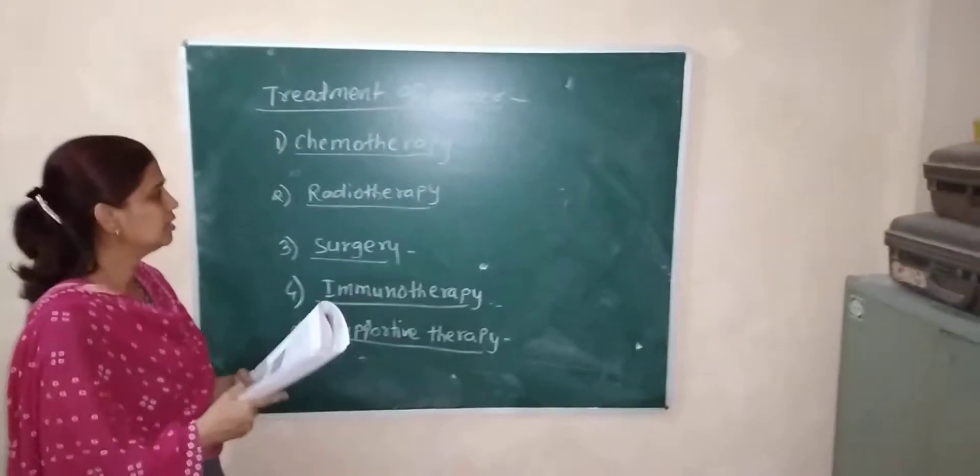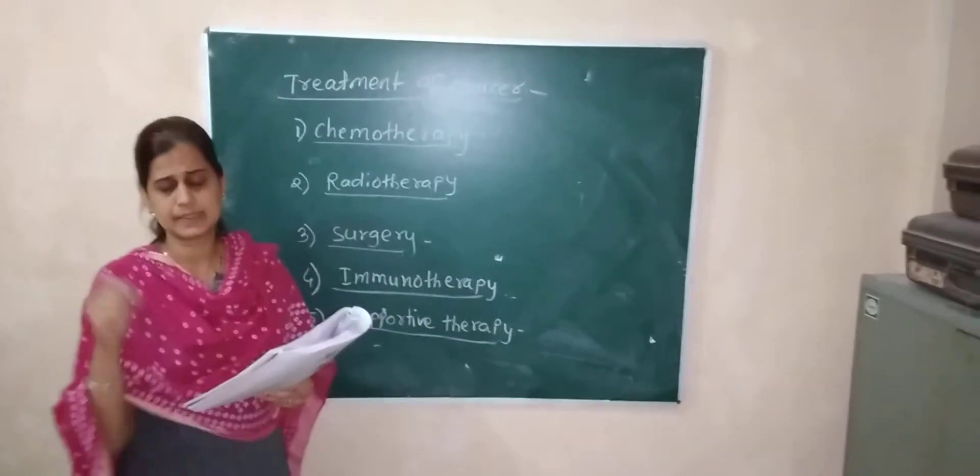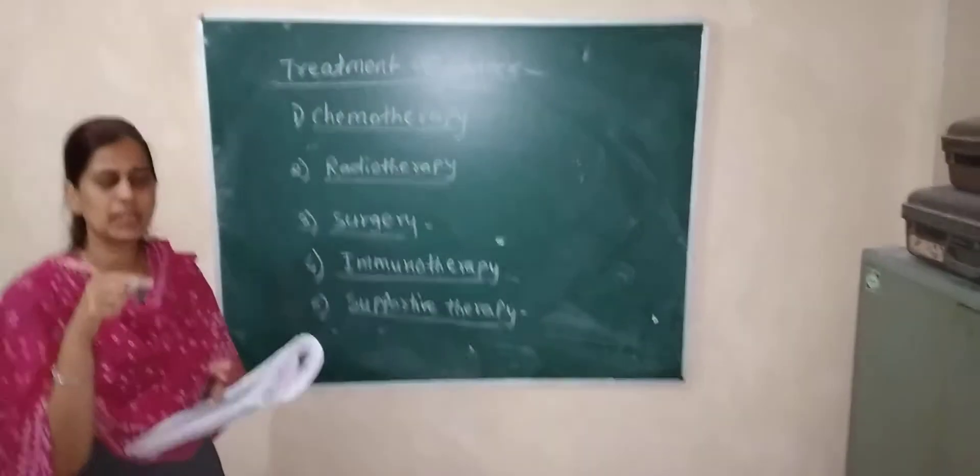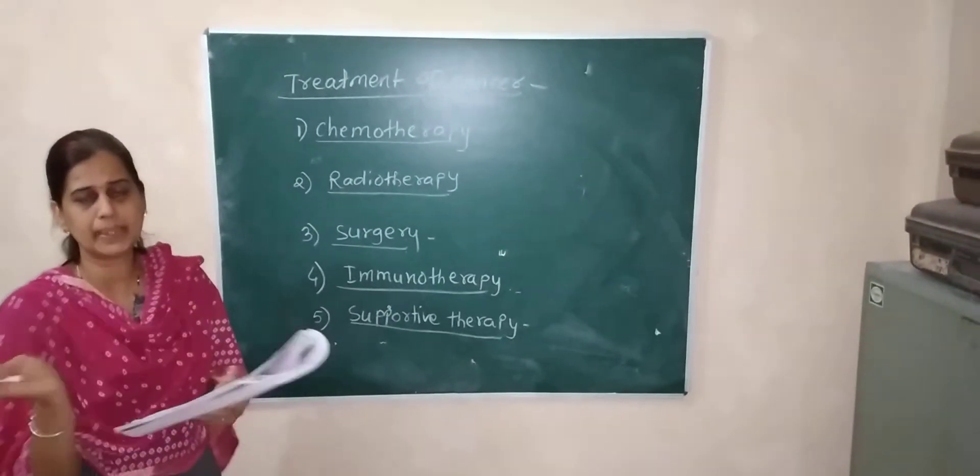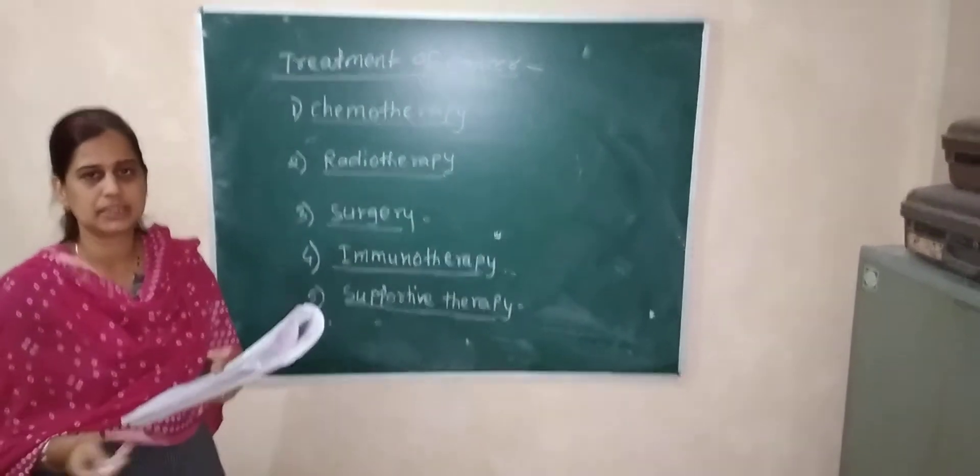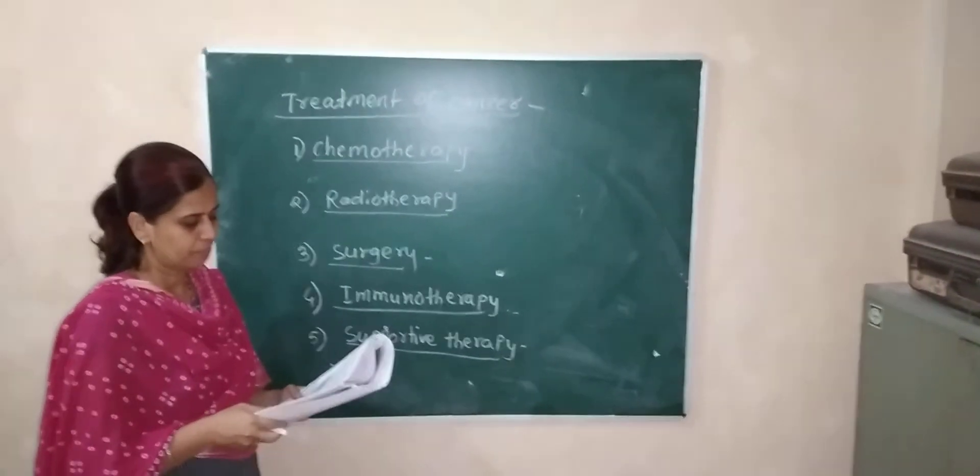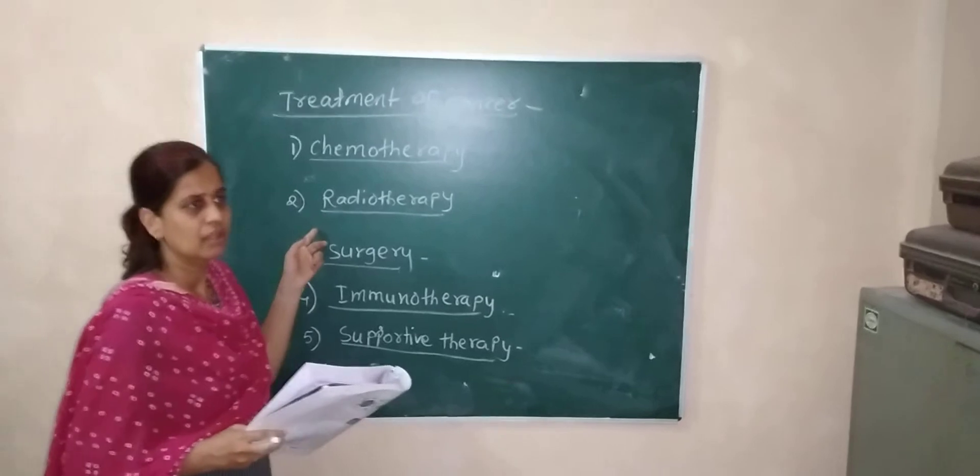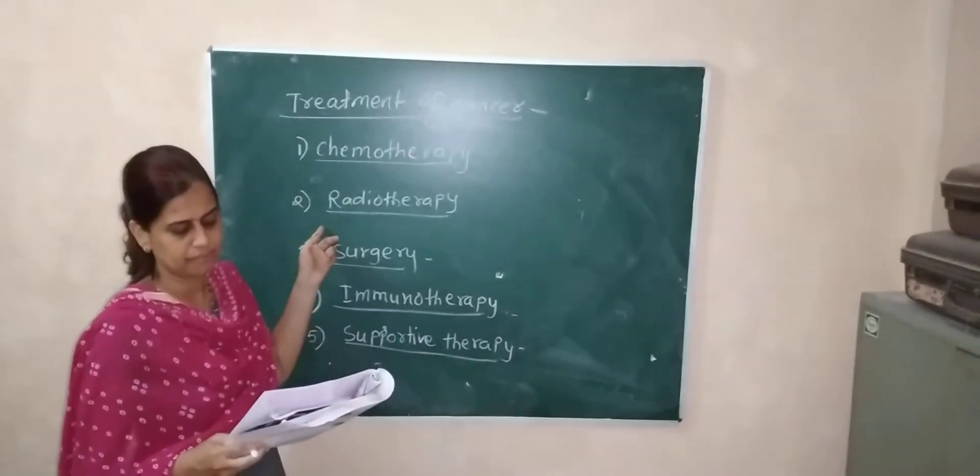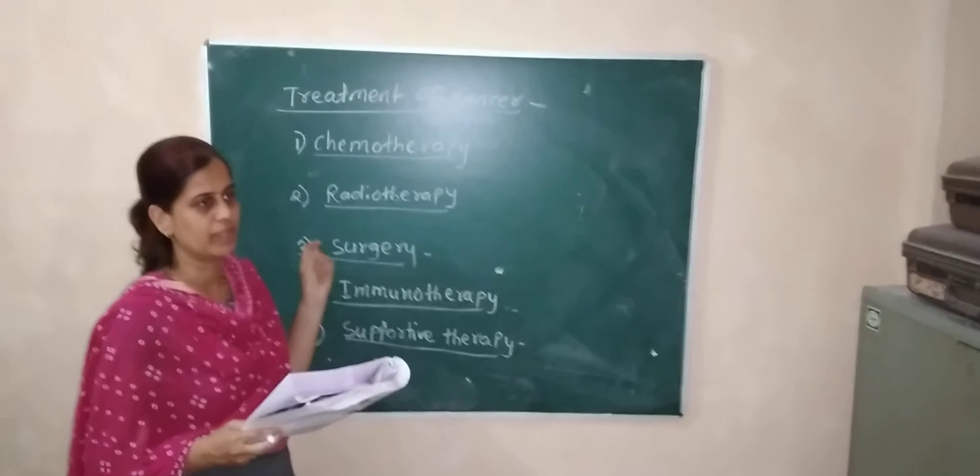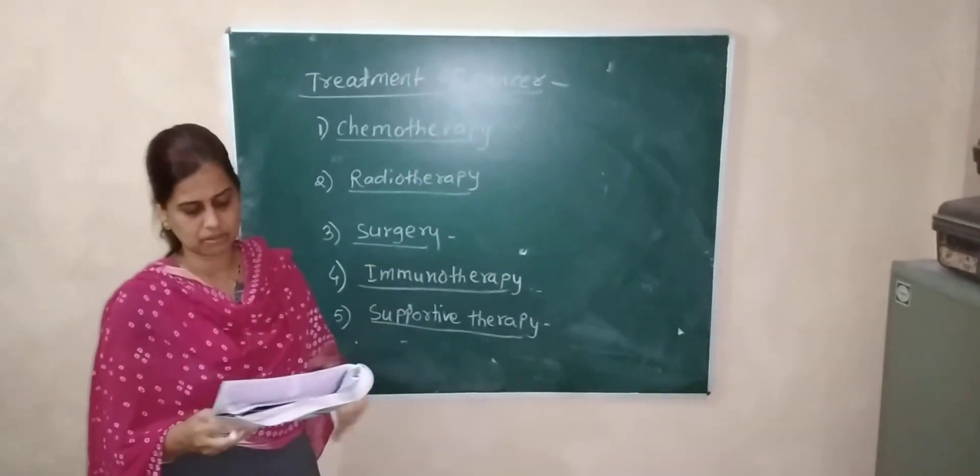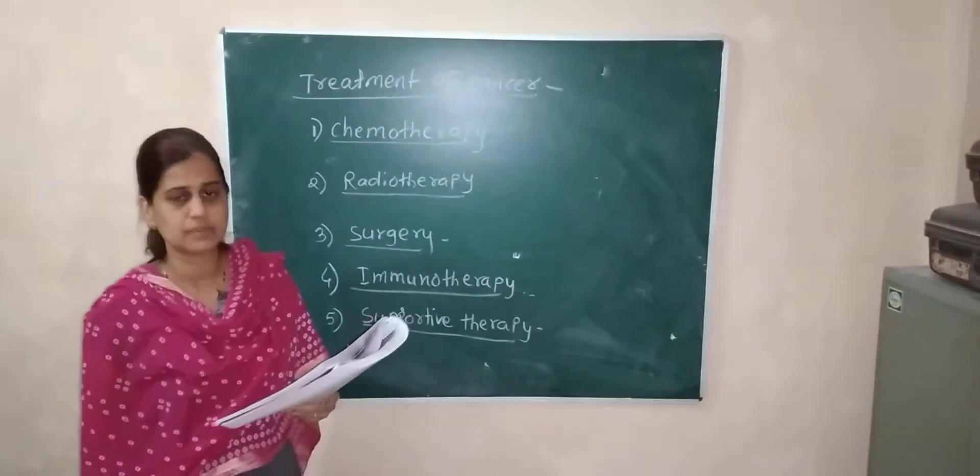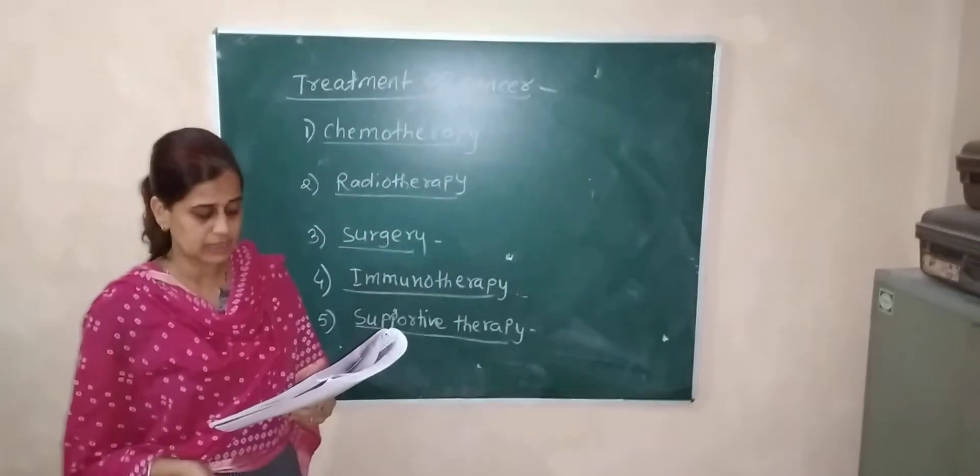Cancerous cells can break and spread to other parts of the body like the brain. Radioactive materials such as cobalt, iridium, and iodine are used in radiotherapy. X-rays, gamma rays, and charged particles are used to bombard the cancerous tissues.